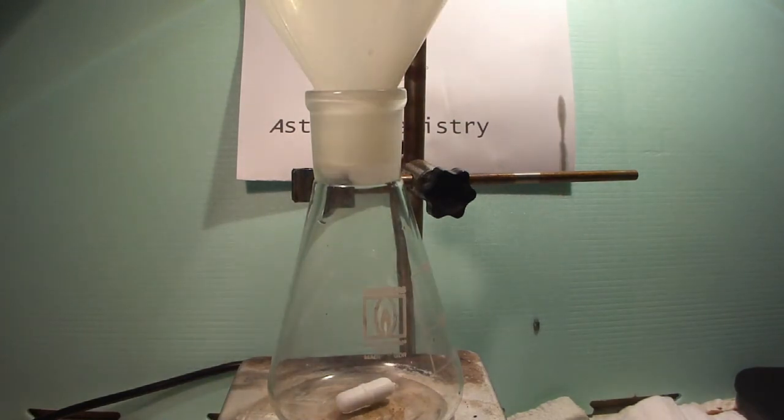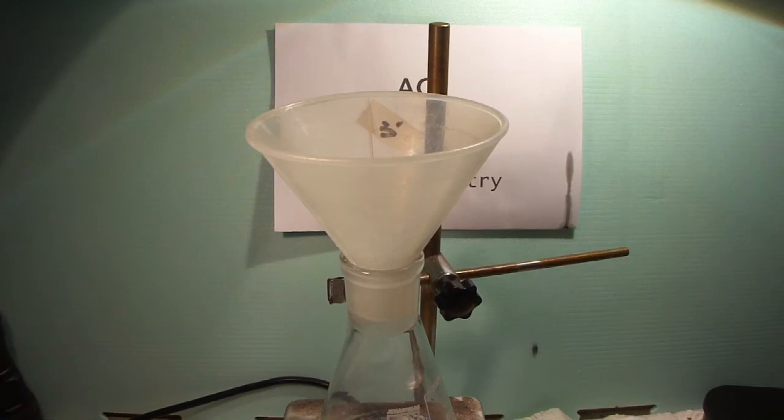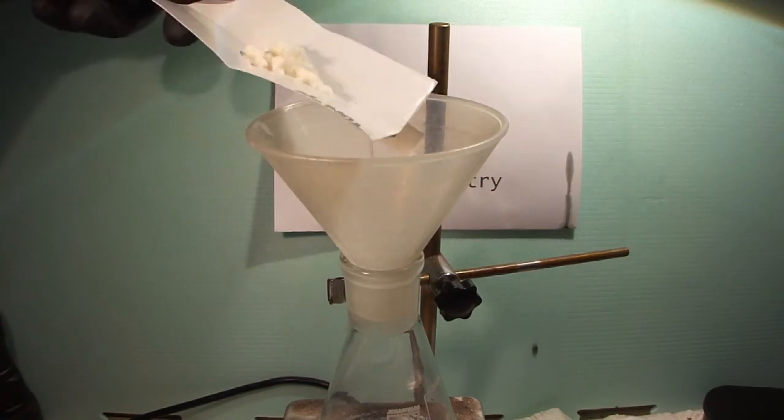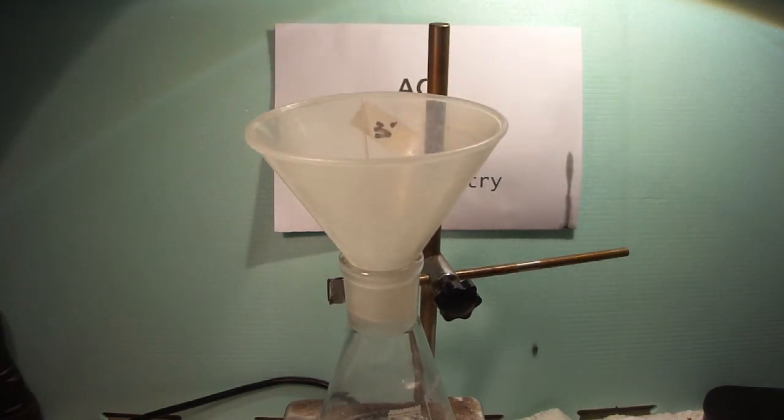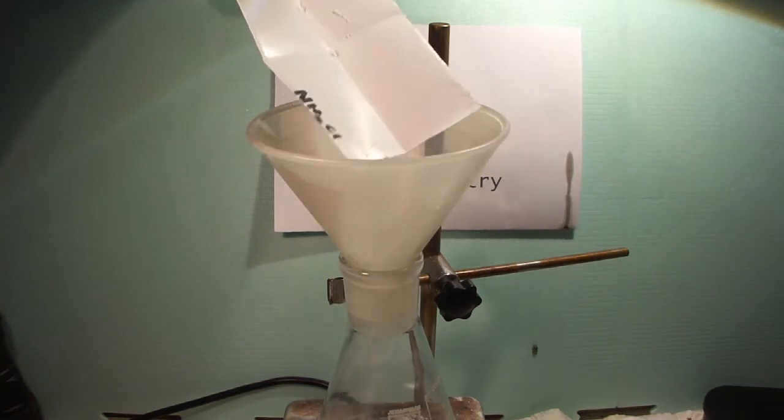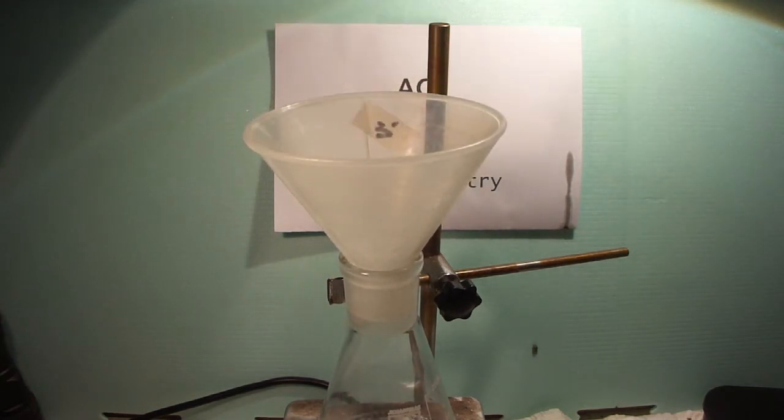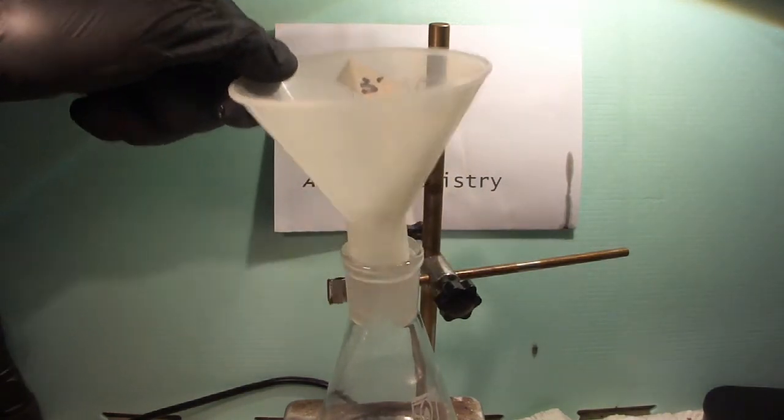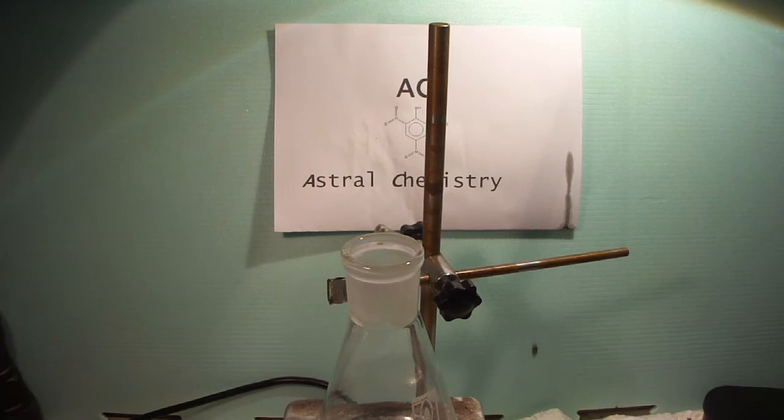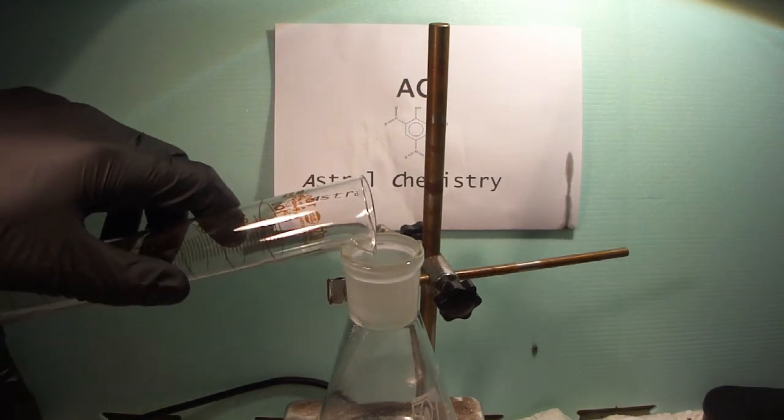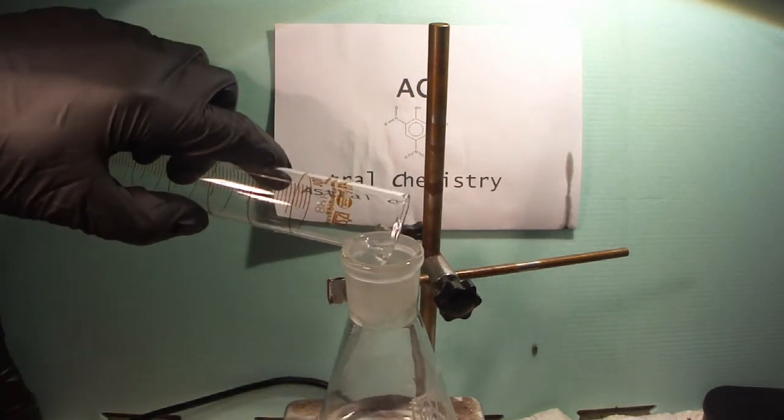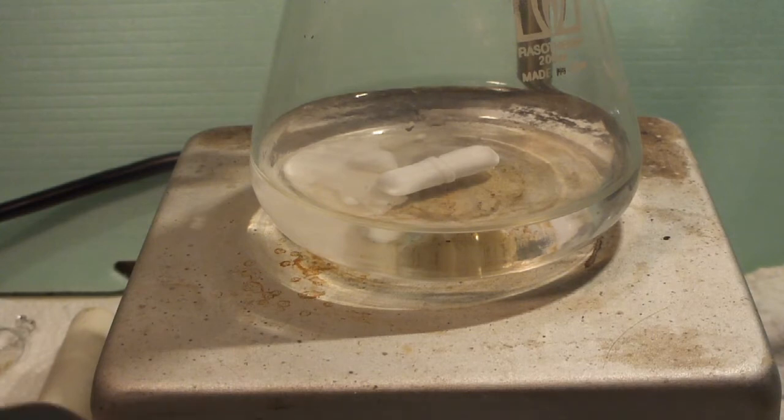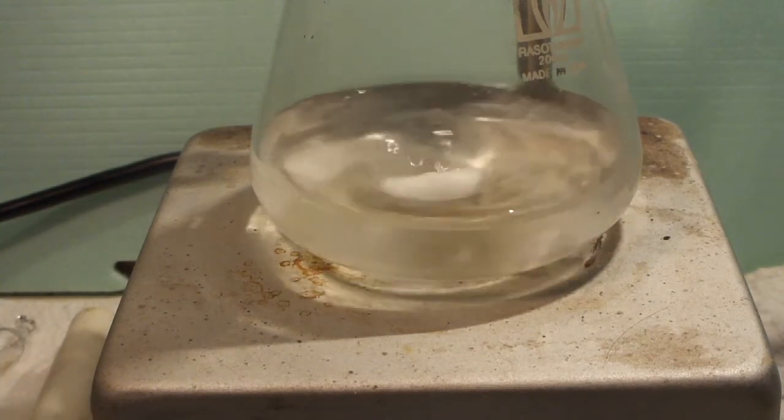Then, equip an Erlenmeyer flask with a stir bar and a wide mouth funnel and place the flask on a hot plate. Add the sodium nitrite and the ammonium chloride to the flask, followed by 47 milliliters of distilled water. The exact amount of water is not critical. Just make sure that both solids dissolve. Do not forget to turn on stirring.